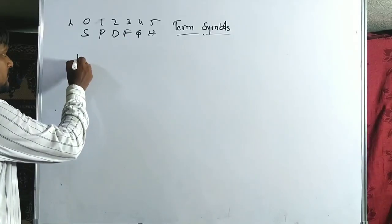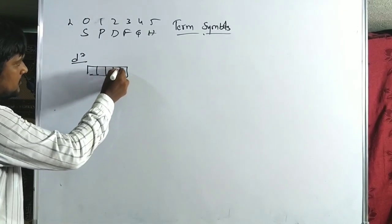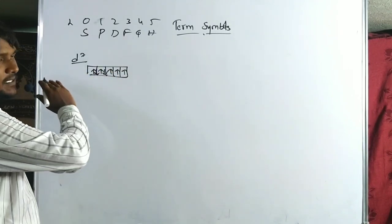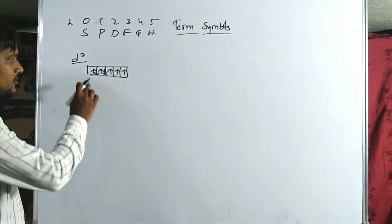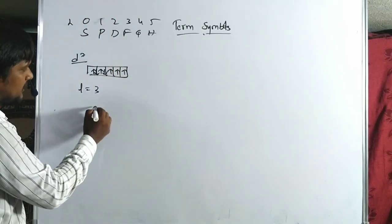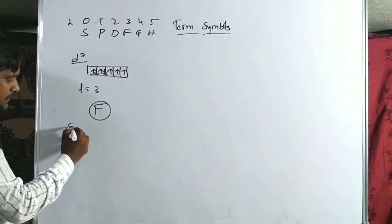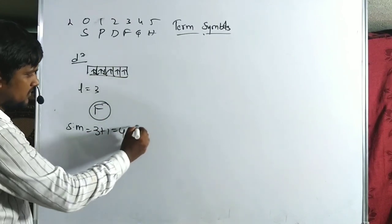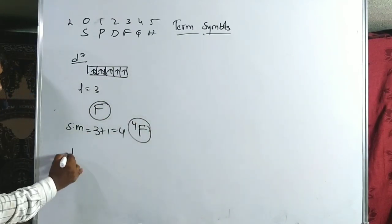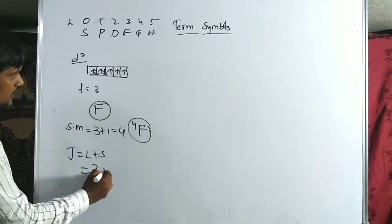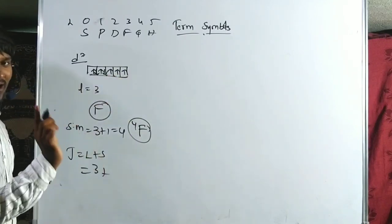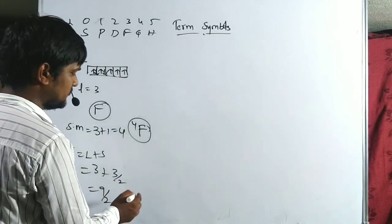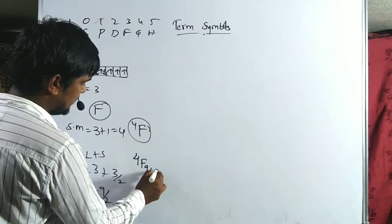For D7: seven electrons — five fill all orbitals, two additional electrons pair at +2 and +1. The remaining 3 unpaired electrons give L = 2+1 = 3, term is F. Multiplicity = 3+1 = 4, giving 4F. More than half-filled, J = L+S = 3 + 3/2 = 9/2. Ground term symbol for D7 is 4F(9/2).